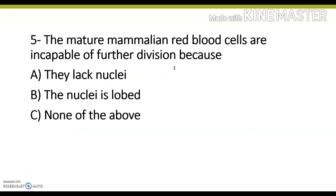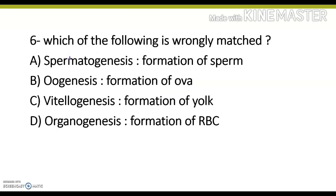The mature mammalian red blood cells are incapable of further division because they lack nuclei. Its correct answer is option A, they lack nuclei. That's why they are incapable of further division.